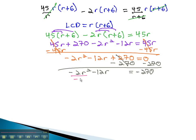Next, we divide by a, the negative 2. This gives us r squared, plus 6r, equals 135.